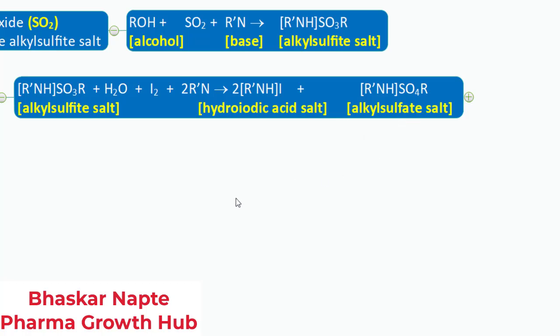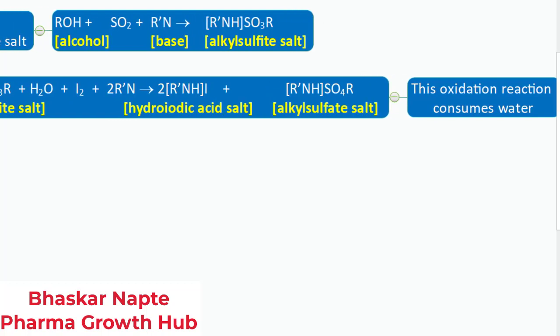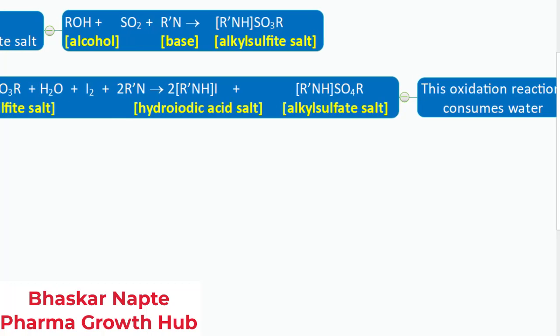Having discussed this reaction, what you can learn is that the oxidation reaction consumes water. There is a water molecule required because without the water molecule the oxidation will not occur, and the water molecule will get consumed during this oxidation reaction. One mole of iodine will be responsible for consumption of one mole of water molecule. In Karl Fischer titration you will understand the content of water based on the consumption of iodine, because the consumption of iodine will be directly proportional to the content of water, and this is very much clear by this reaction.